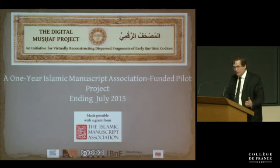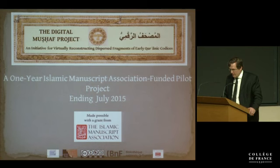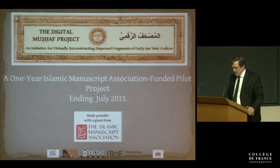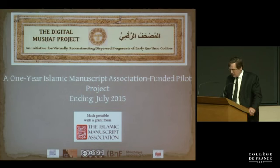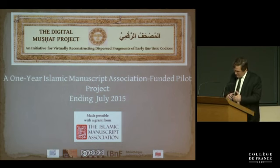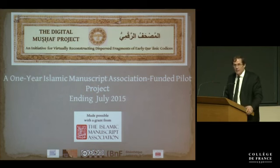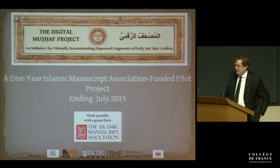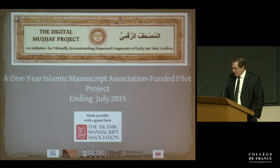Being able to view a complete manuscript, or as much of it that survives, allows scholars to get a holistic view and to answer questions that cannot be answered by looking at just a few folios. For instance, one can see if there are signs that more than one scribe was involved in the production. Also, one can trace important grammatical features throughout the entire manuscript and place it in a historical context of the development of early Arabic grammar. One can also trace artistic features in the early historical development of Quranic illumination.